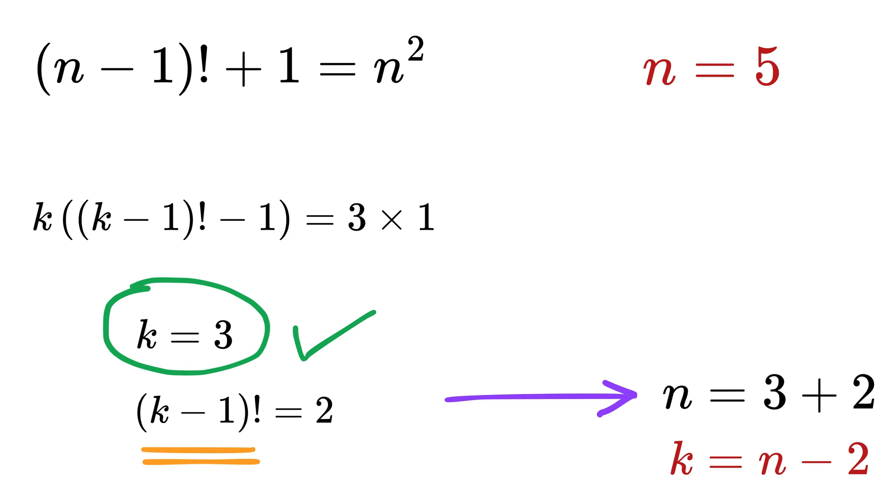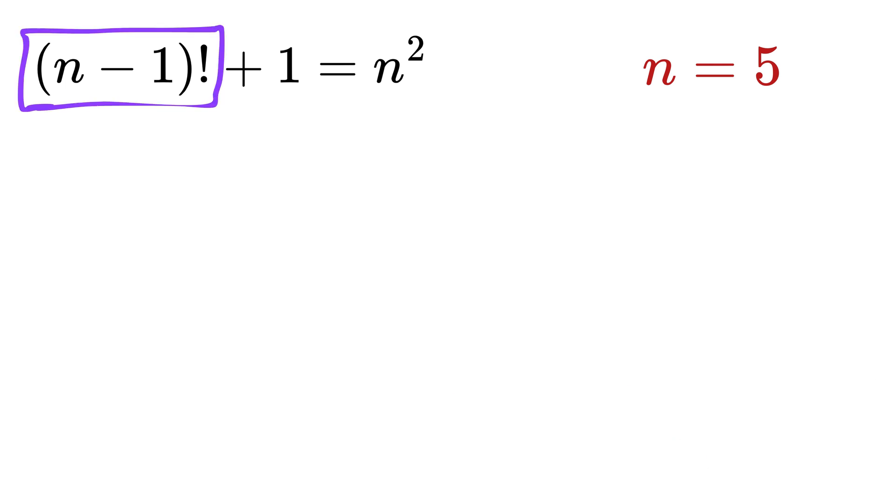Let us verify the same. n minus 1 factorial equals 5 minus 1 or 4 factorial, which is 24, plus this one equals 25. And for the right-hand side, n square is 5 square, which is also 25. And there we go.